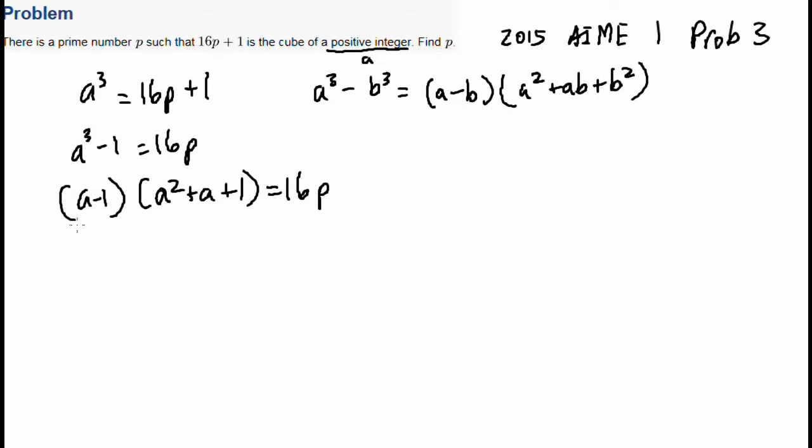Okay, what does this tell us? Well, first of all, we realize that a has to be odd. And why is that? It's because 16p plus 1 is odd. Since 16 is an even number, so you multiply by anything, it's still even, and plus 1 makes it odd. And a is a cube, and odds cubed are odd, and evens cubed are even. So if this side is odd, this side is odd, and since this side is odd, a is odd.